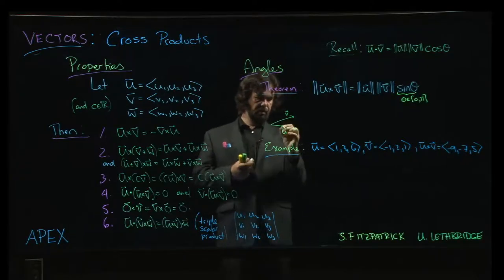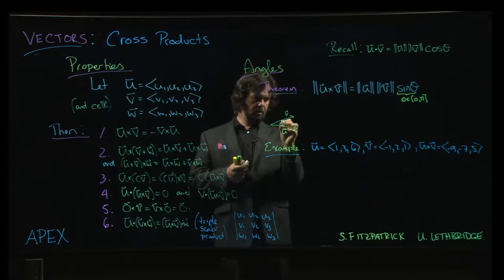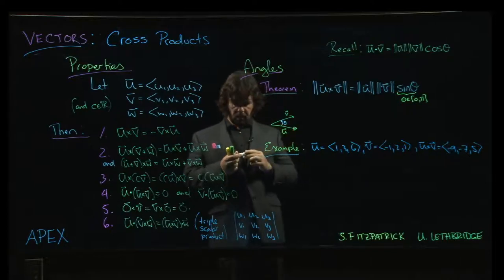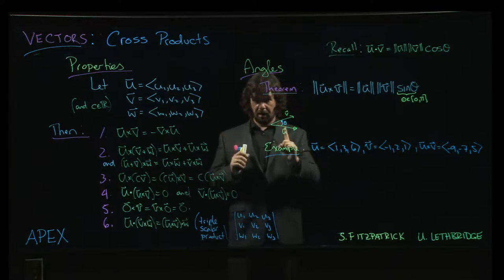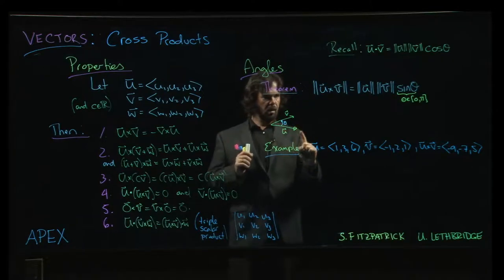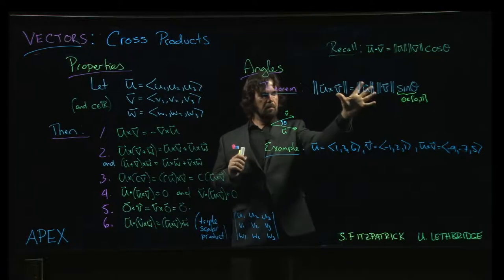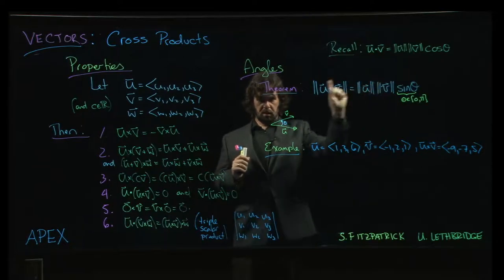And so one of the things that you do is you would teach the cross product like this. You'd say, okay, I have two vectors, u and v. And you would say, well, the cross product is defined by two things. One, the magnitude. Two, the direction.